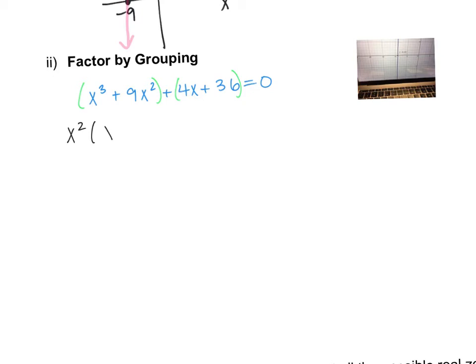So I'm going to factor out x squared because that's my lowest power. That leaves me with x plus nine. And then this one here, this is a four and a 36. So I can at least factor out four. That would leave behind 36 divided by four is a nine that's left behind. So both of these have x plus nine. So I can factor that out, which leaves behind an x squared and a positive four. So x squared plus four.